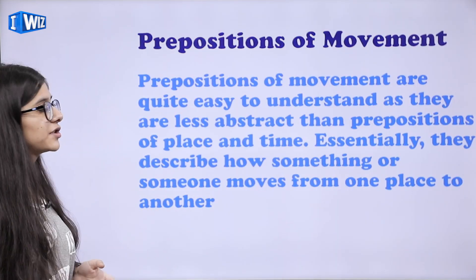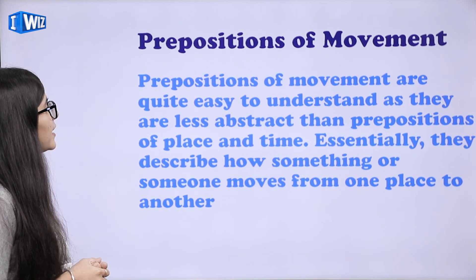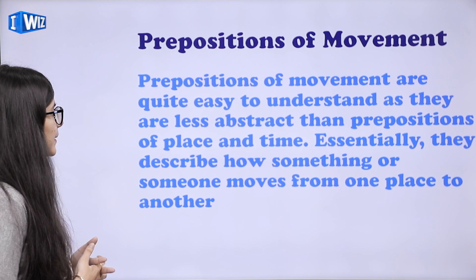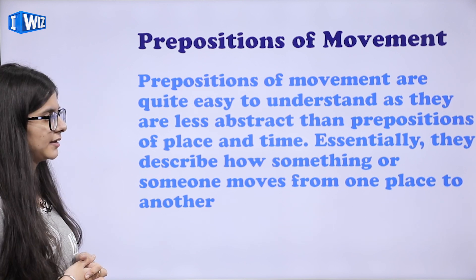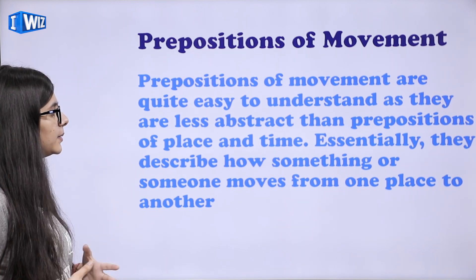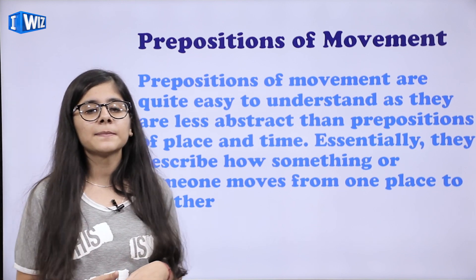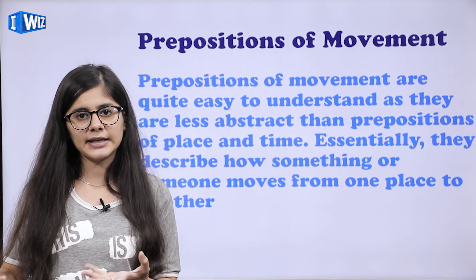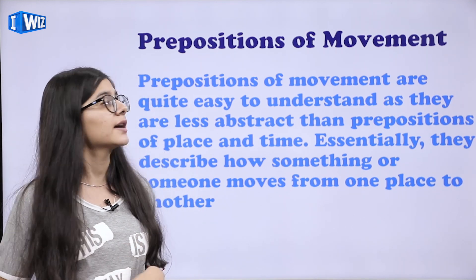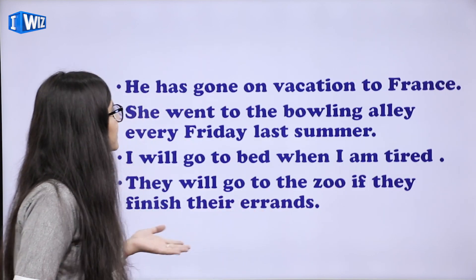So, prepositions of movement. Prepositions of movement are quite easy to understand as they are less abstract than prepositions of place and time. Essentially, they describe how something or someone moves from one place to another. Matlab, kaise koi cheez ya koi insaan ek jagah se doosri jagah move karta hai — toh woh prepositions of movement ke through hamein pata lagta hai.